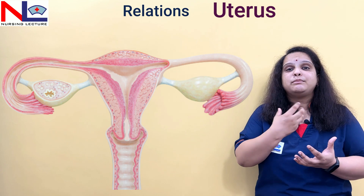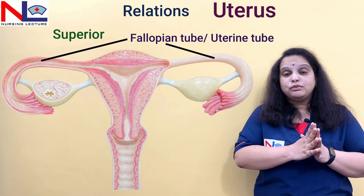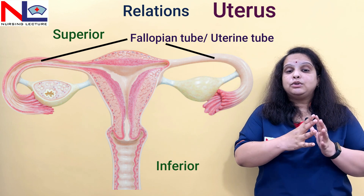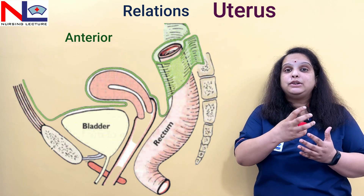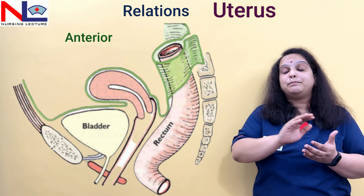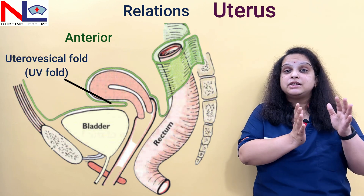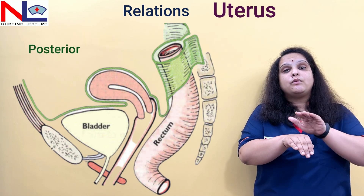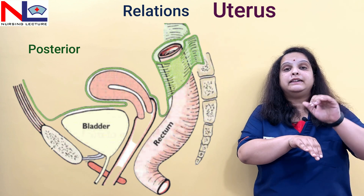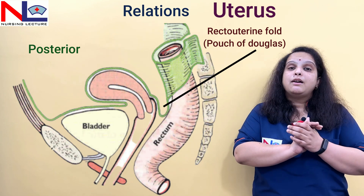Next we look at the relationships and communications of nearby structures with the uterus. Superiorly, the uterus is connected with the two uterine tubes laterally, and inferiorly the uterus is connected by the vagina. Anteriorly, there is a fold of peritoneum which reflects over the bladder — this fold between the bladder and the anterior part of the uterus is the utero-vesical fold. Posteriorly, the posterior wall of peritoneum reflects over the rectum, creating the recto-uterine pouch, also called the pouch of Douglas.